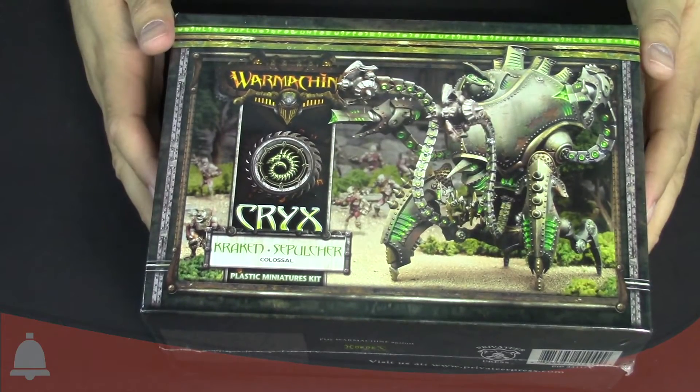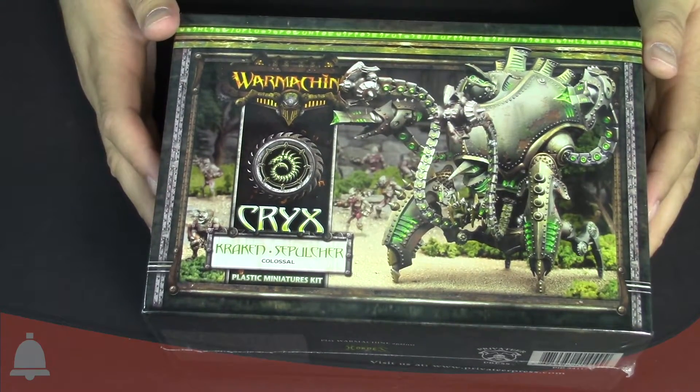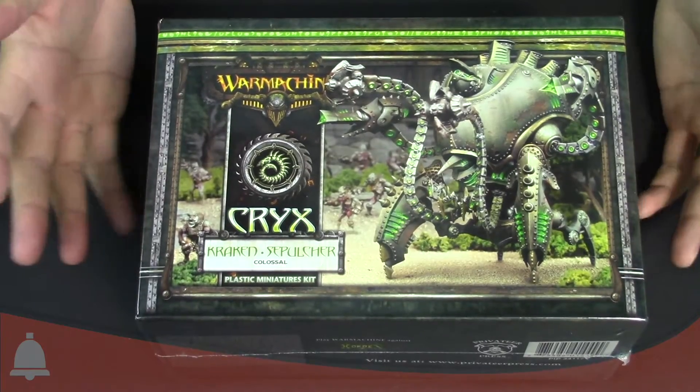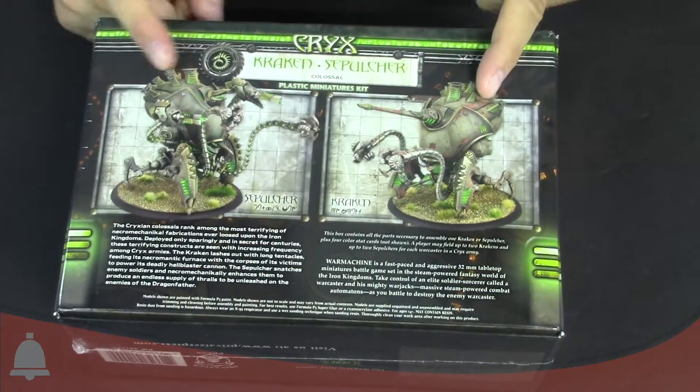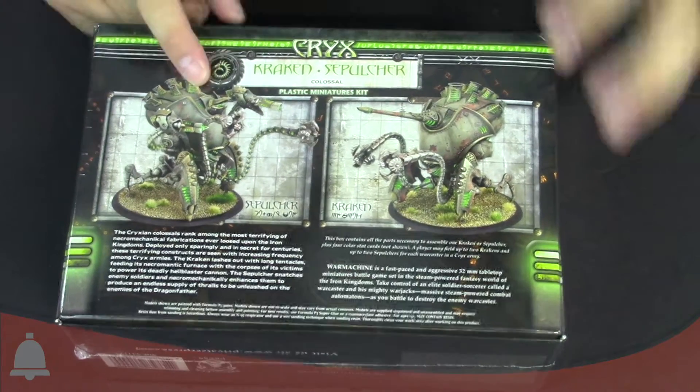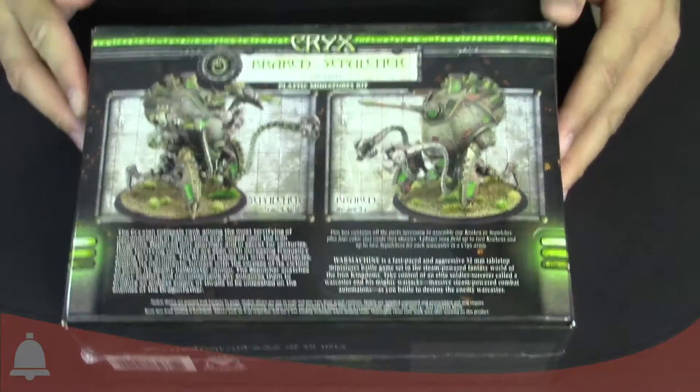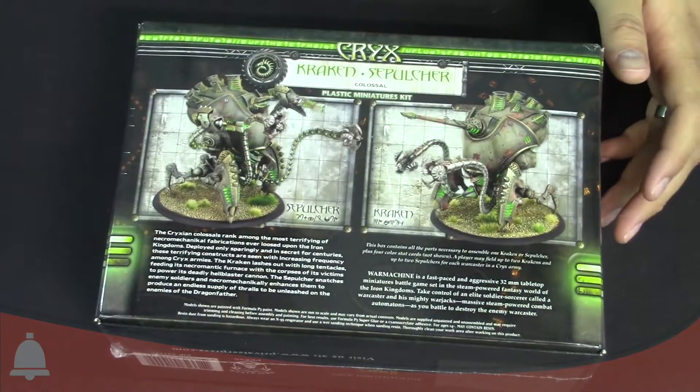I can't pronounce that word, so Sepulcher. It's a sea monster for Cryx, obviously for Warmachine from Privateer Press. Here's the back of the box, there's the two things you can build. We've seen that guy before, and metal and other stuff, and then this is the newer guy. Pretty pumped.